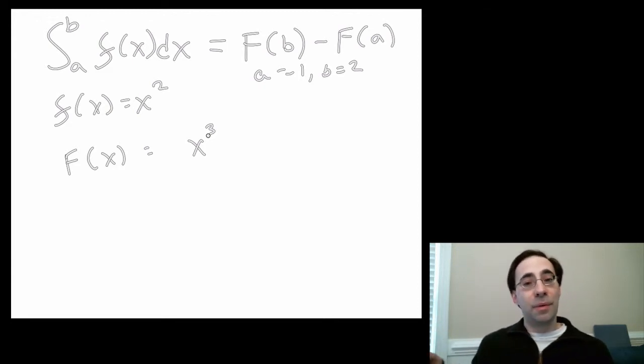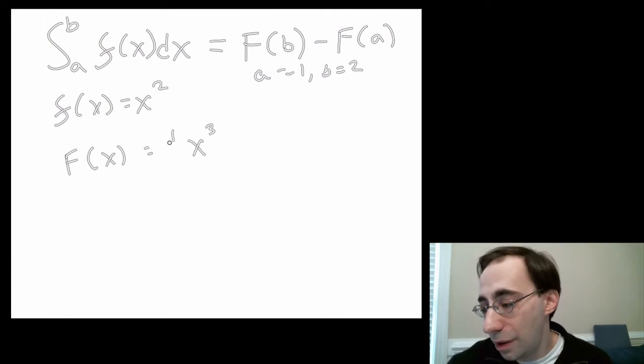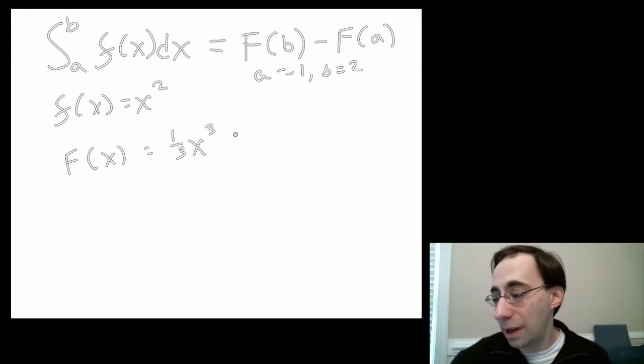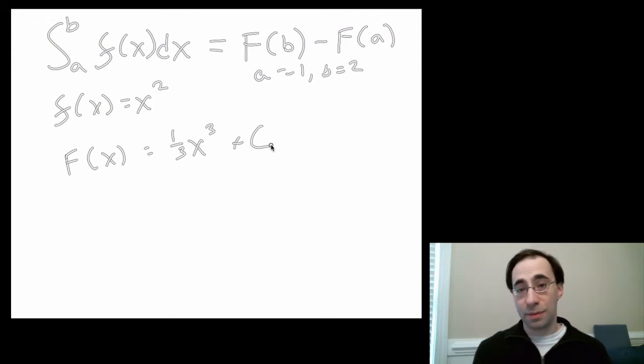So to balance out that 3 I'm going to pull down, I need a 1/3 out front. So this is one possible antiderivative. We can add a c to accommodate all possible antiderivatives. So there we go.